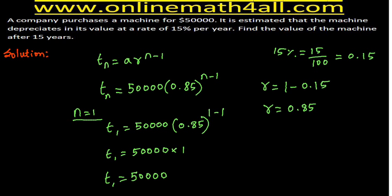Our aim is to find the value of the machine after 15 years — that is, at the end of 15 years. This formula gives the value of the machine at the beginning of a particular year, not at the end. Since they are asking us to find the value at the end of 15 years, we can instead find the value at the beginning of the 16th year, because the value of the machine at the beginning of the 16th year is the same as the value at the end of 15 years. So to find the value at the beginning of the 16th year, we just plug n = 16.